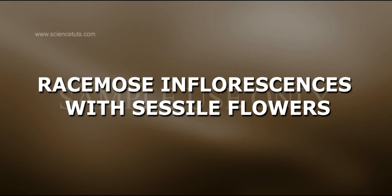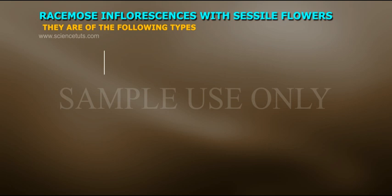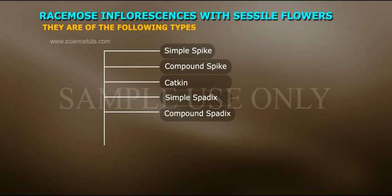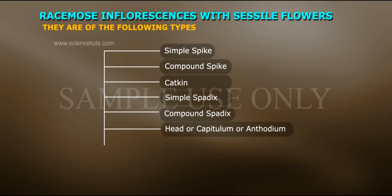Racemose inflorescence with sessile flowers. They are of the following types: 1. Simple spike, 2. Compound spike, 3. Catkin, 4. Simple spadex, 5. Compound spadex, 6. Head or capitulum or anthodium, 7. Compound head. Let us study them one by one.